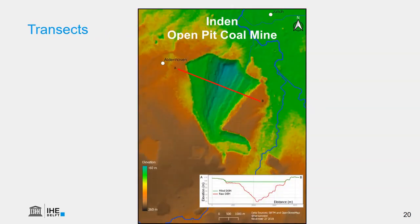The GIS also comes with a lot of analysis tools, such as creating transects. In this example we see a transect through an open pit mine. The red line gives the elevation before applying the so-called fill sinks algorithm that we use in hydrology, which is indicated by the green line.